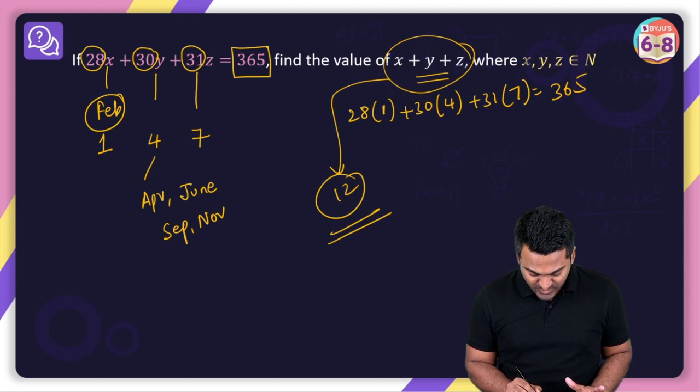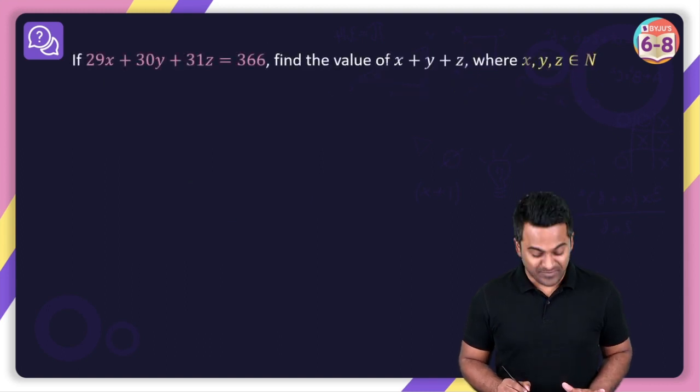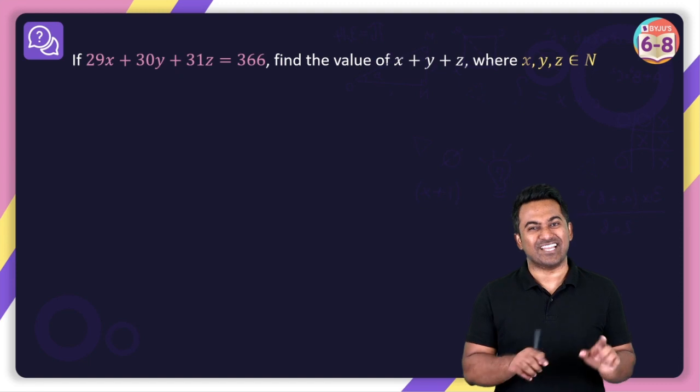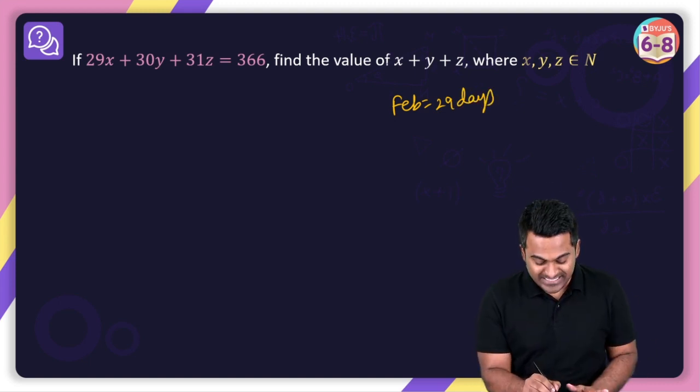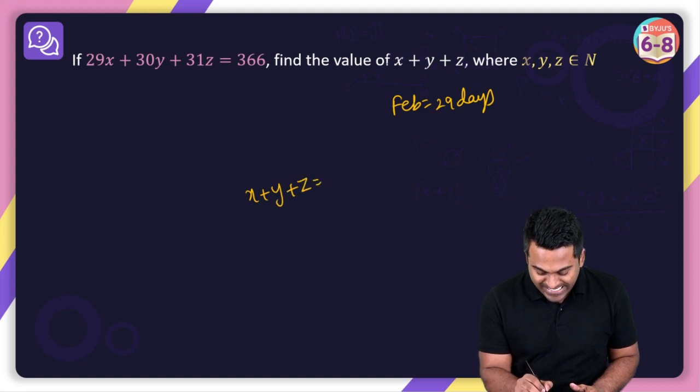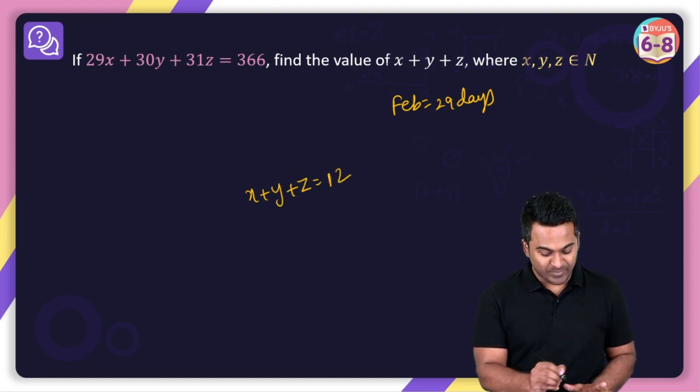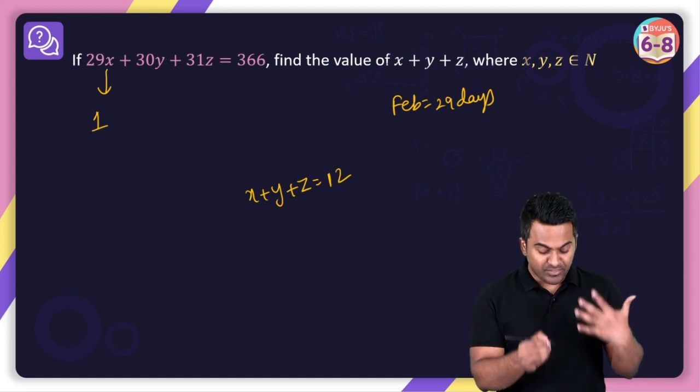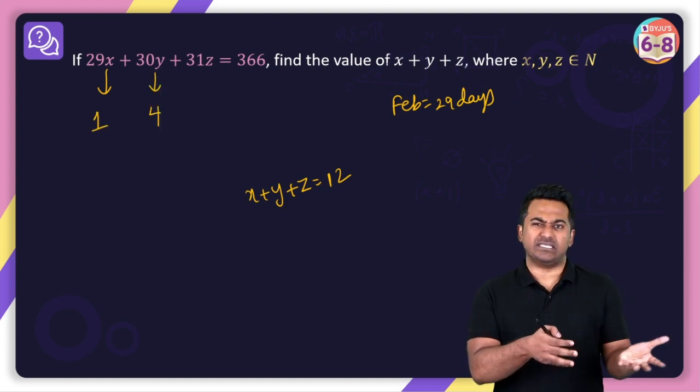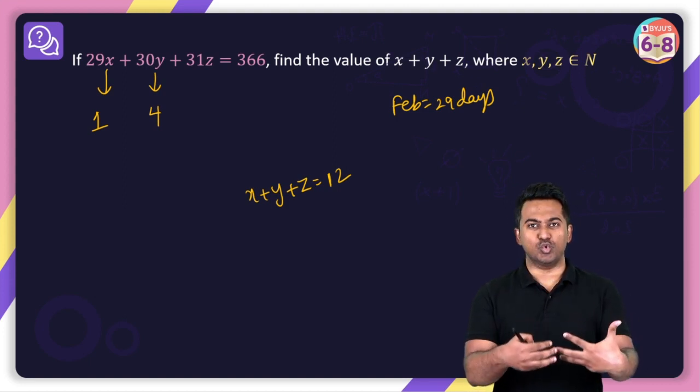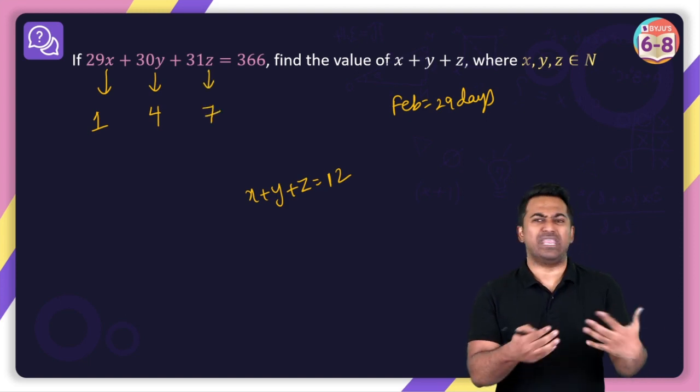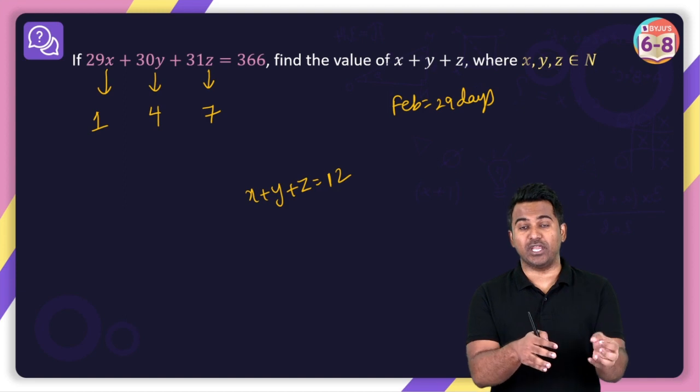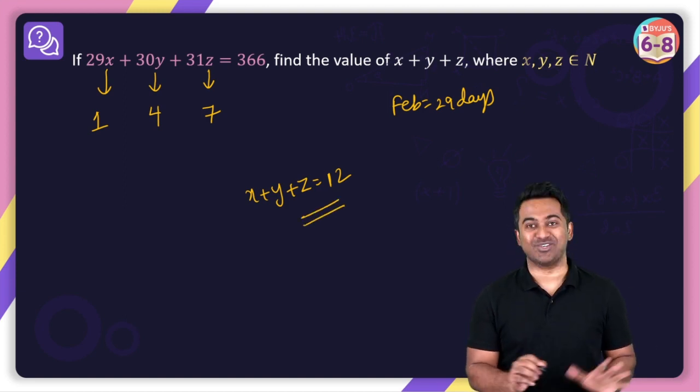Now, an extension to this equation is going to be this: 29x + 30y + 31z = 366. This is where I'm talking about a leap year, because in a leap year, February is going to have 29 days. The solution to this is going to remain the same. The value of x + y + z is going to be 12. Because x here is 1, and that is the month February. Y, again, is going to be 4. The months discussed are April, June, September and November. And z value is going to be 7. The remaining months, of course, are going to have 31 days. You know, your January, March, and all of that. But the answer to this is going to be 12.